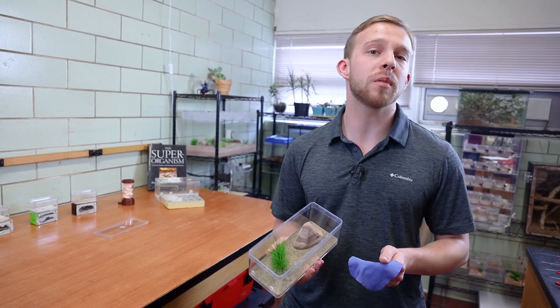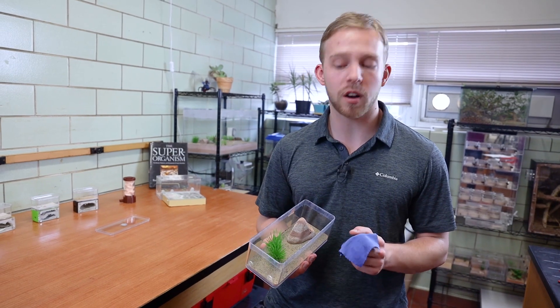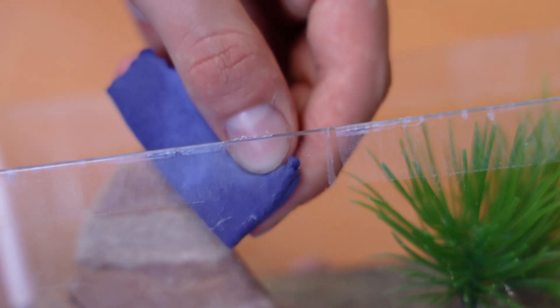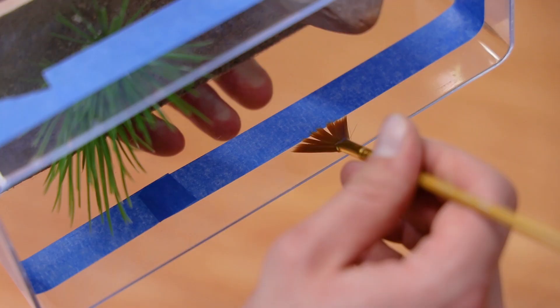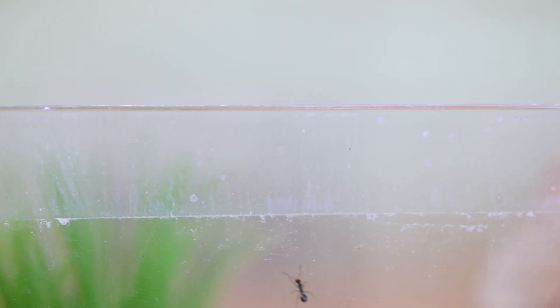After a few months, you may need to reapply the Fluon. To do so, get a soft, moist cloth and simply wipe it away. It's alright if some of it doesn't come off, so long as you are able to create another smooth layer. Be careful not to scratch the plastic or glass.